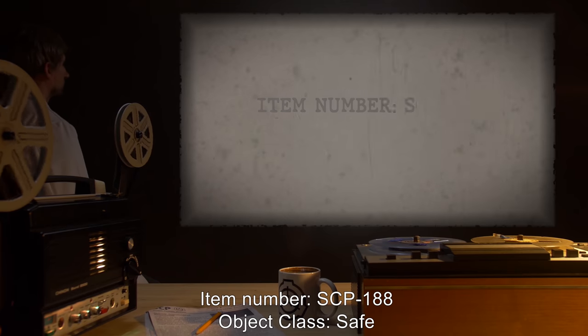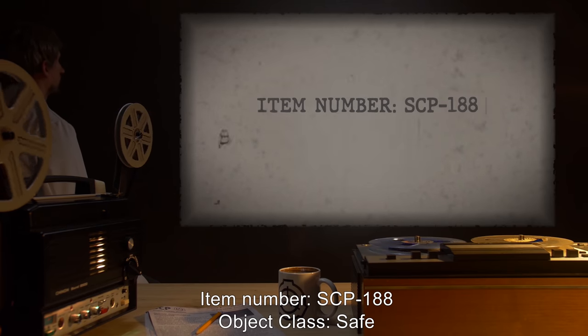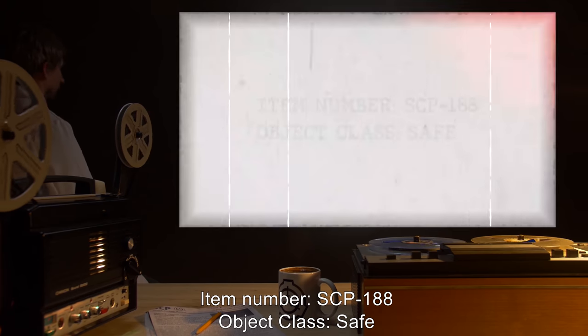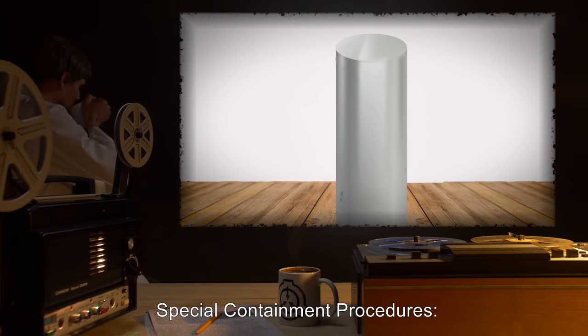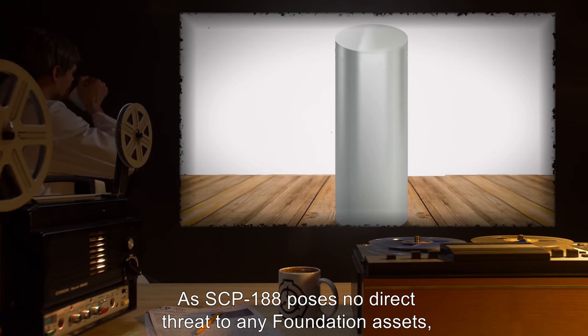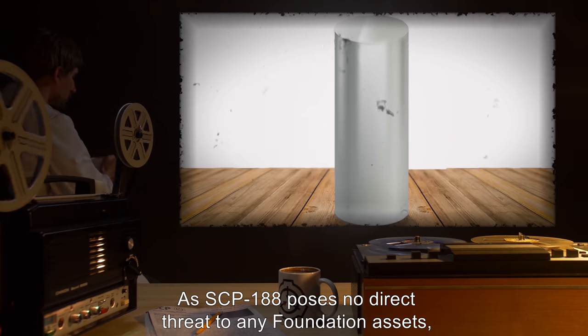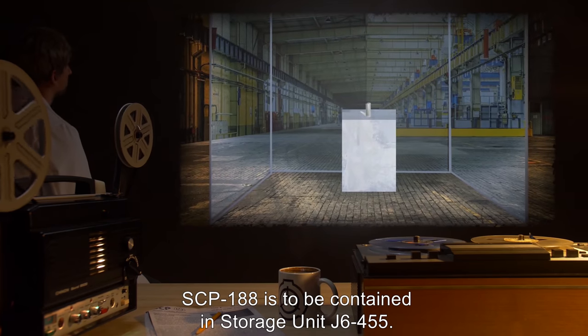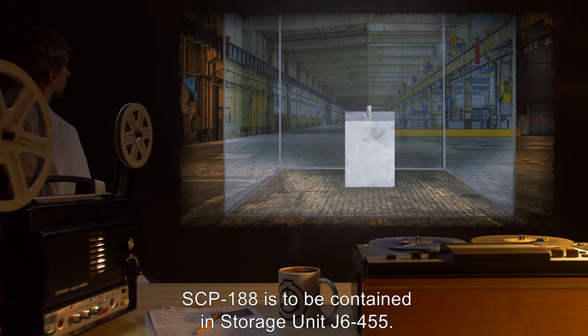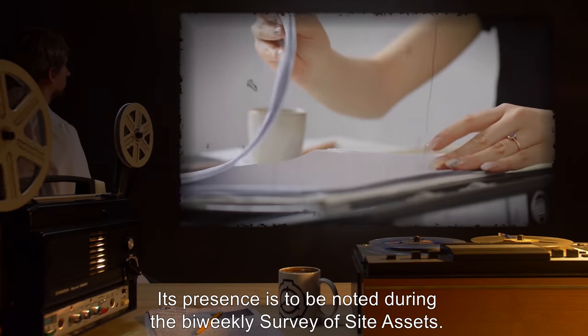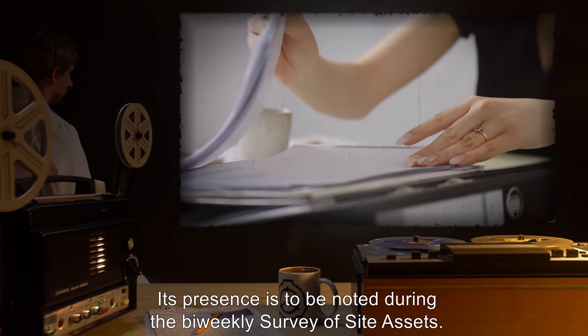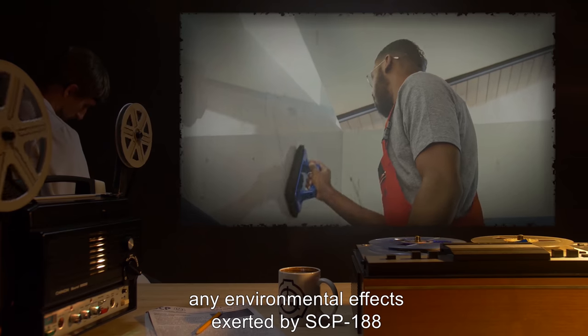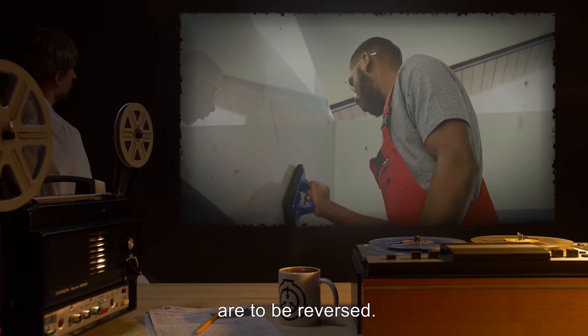Item Number SCP-188, Object Class Safe. Special Containment Procedures: As SCP-188 poses no direct threat to any Foundation assets, SCP-188 is to be contained in Storage Unit J6-455. Its presence is to be noted during the biweekly survey of site assets. During this time, any environmental effects exerted by SCP-188 are to be reversed.